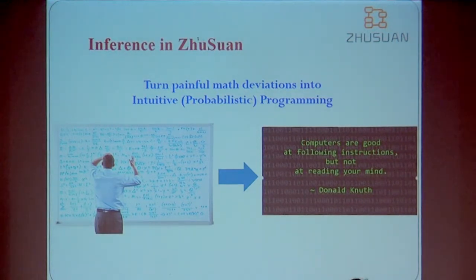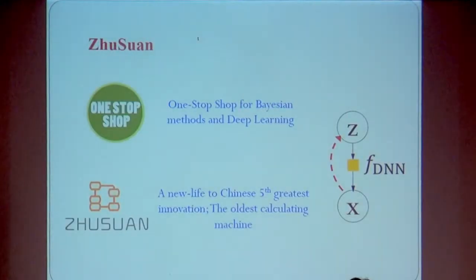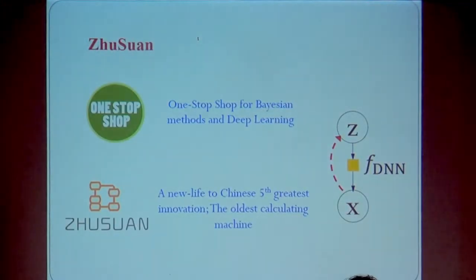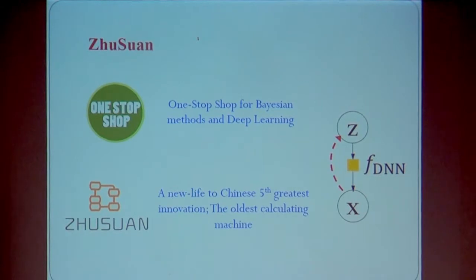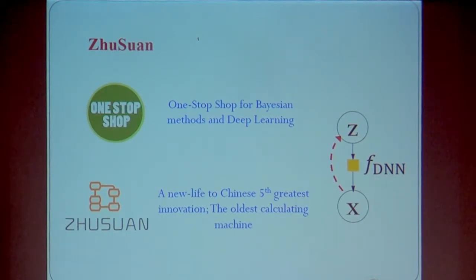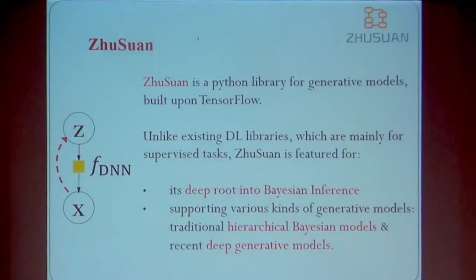We are targeting recent Bayesian deep learning models. The library we call 'Zhusuan' — in English it refers to the abacus, perhaps the oldest calculating machine in the world, also known in China as the fifth greatest invention. We use the name to represent calculation. We hope this to be a library for both Bayesian methods and deep learning, and their intersection.